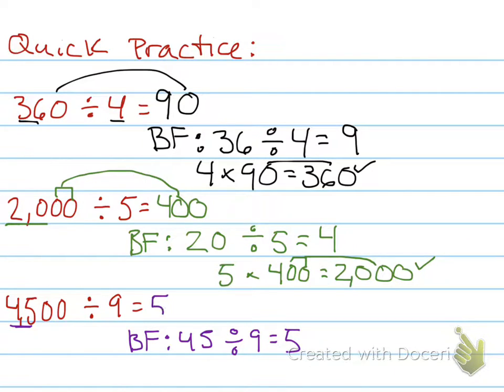So, my quotient will be five. How many zeros? Two. One. Two. Check my work.